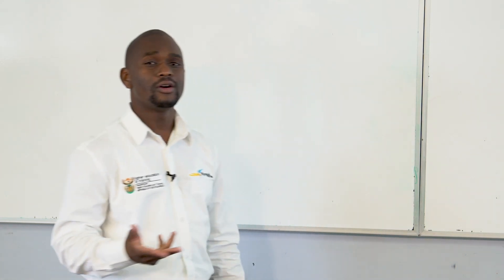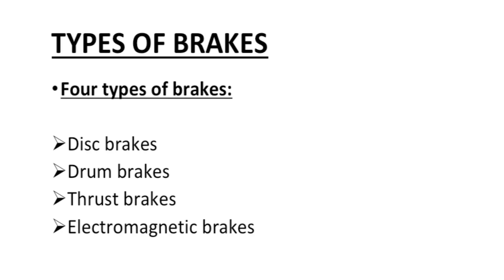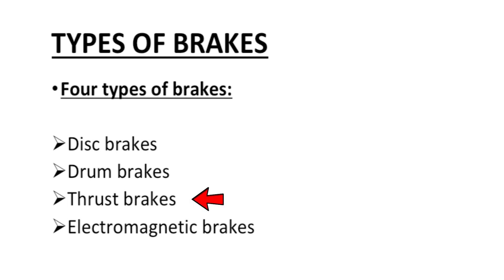We have different types of brakes, but in fitting level 3, we only talk about four types. Type number one, we have a disc brake; a drum brake; a thruster brake; and an electromagnetic brake.